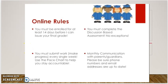Please remember some of the rules for this course. You must be enrolled in Peer Counseling 1 or 2 for at least 14 days before I can issue your final grade. This is the minimum seat requirement, so you must be enrolled from your first assignment to your last for at least 14 days. You must also submit work and make progress every single week.